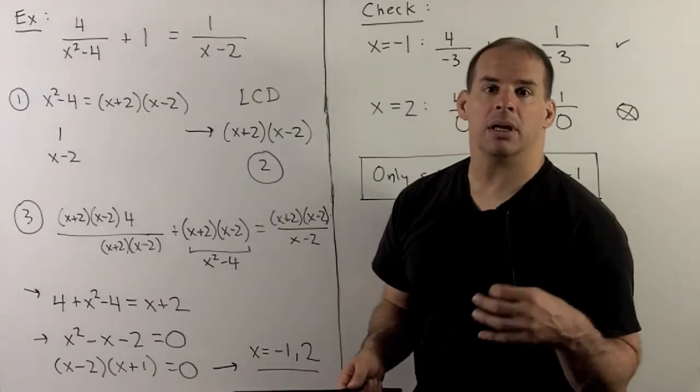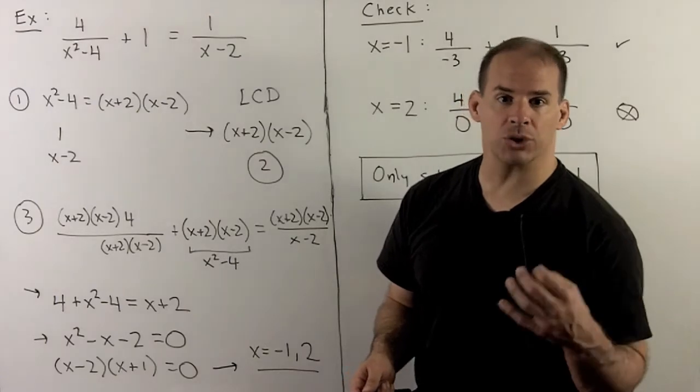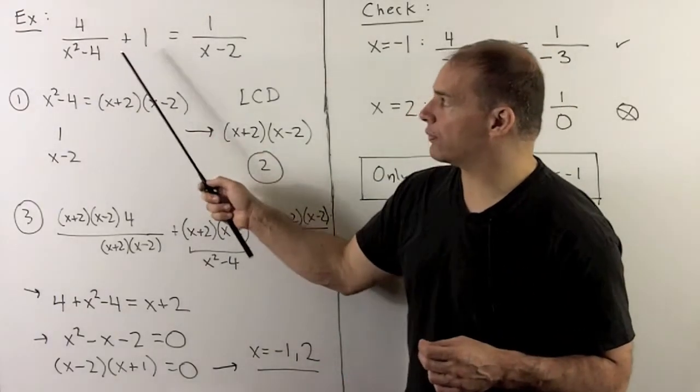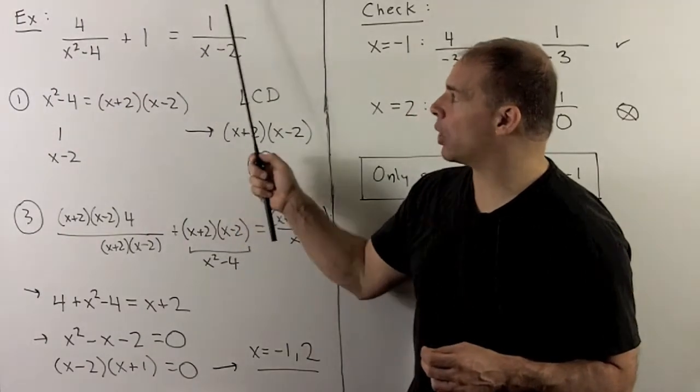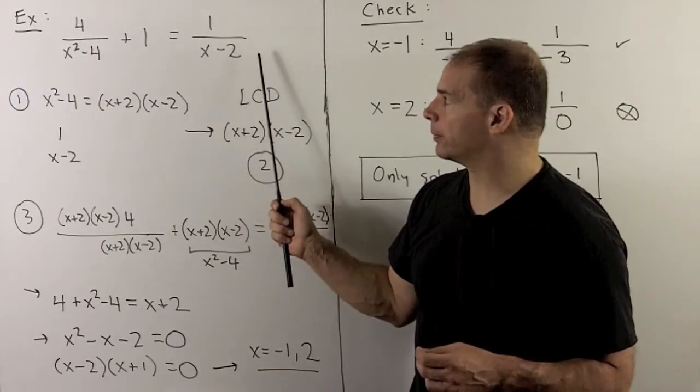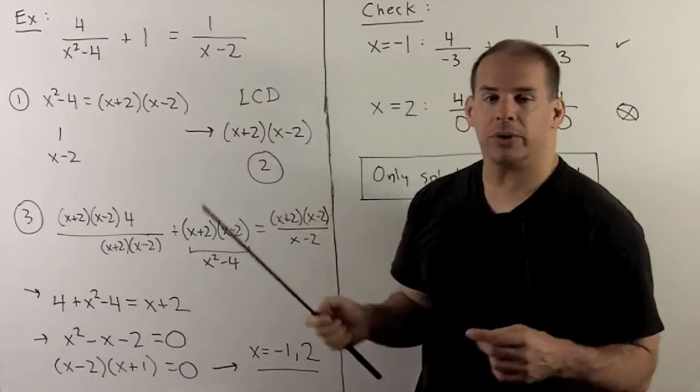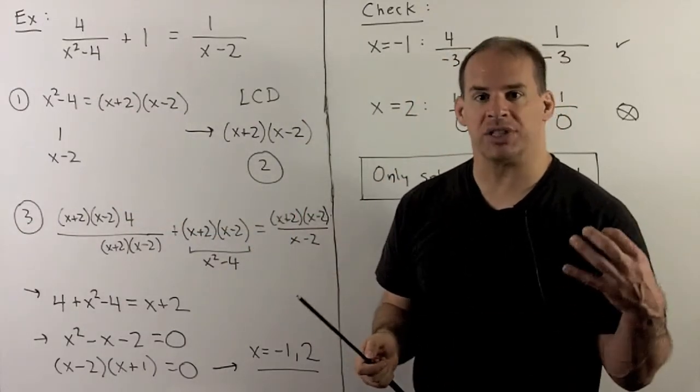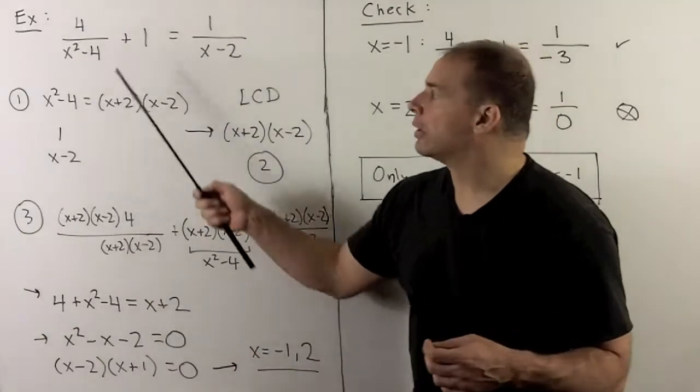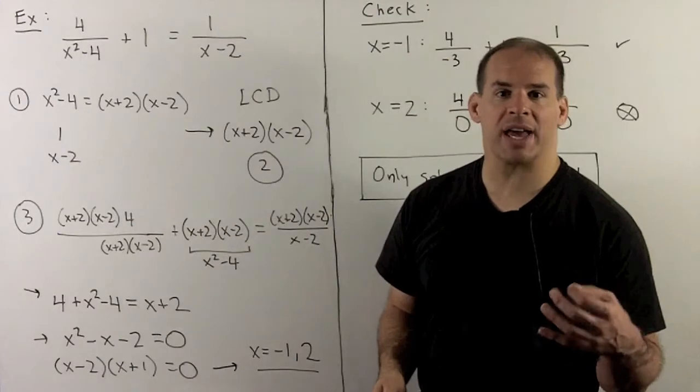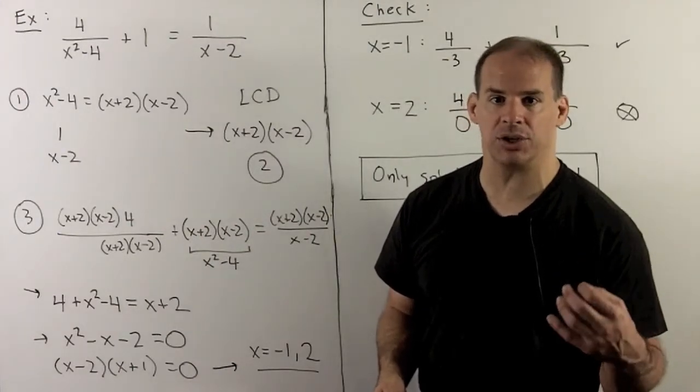To finish, let's consider an example where one of our solutions fails. We have 4 over x squared minus 4 plus 1 equal to 1 over x minus 2. We go through our checklist. For my first step, we factor each denominator. First term: x squared minus 4. That's a difference of two squares, so that factors as x plus 2, x minus 2.